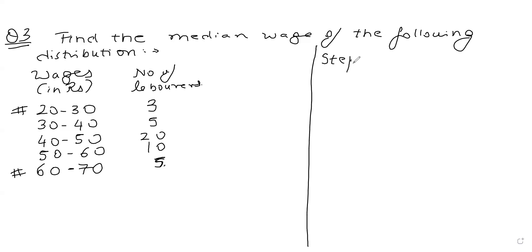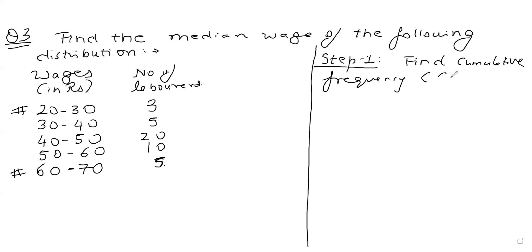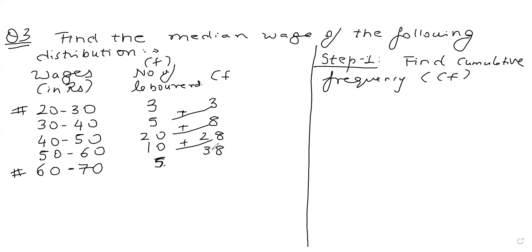Step 1: find cumulative frequencies. CF column: 3, then 3+5=8, then 8+20=28, then 28+10=38, then 38+5=43.